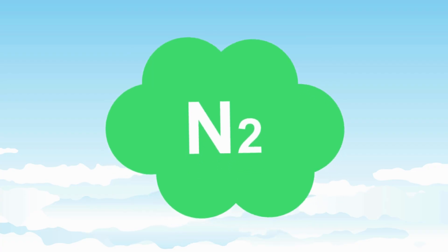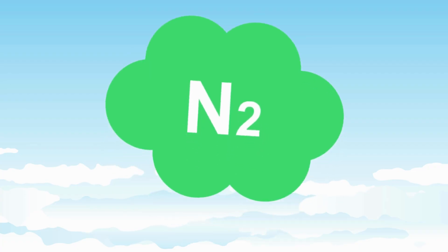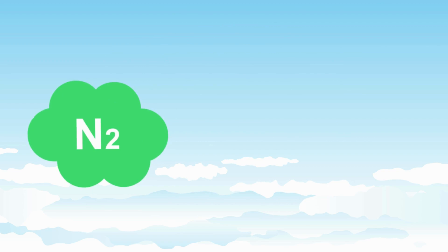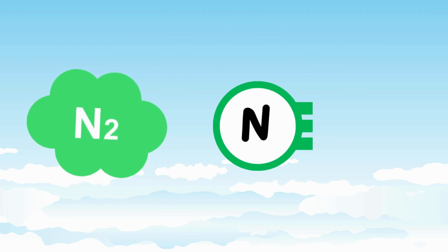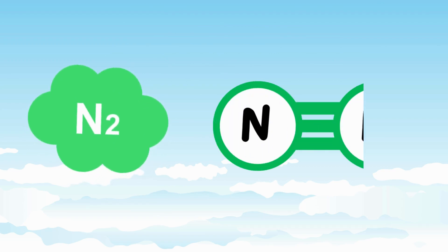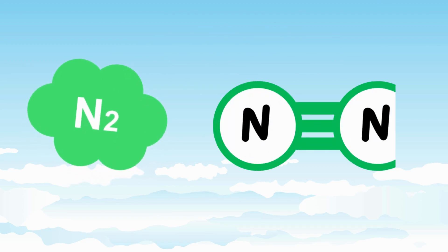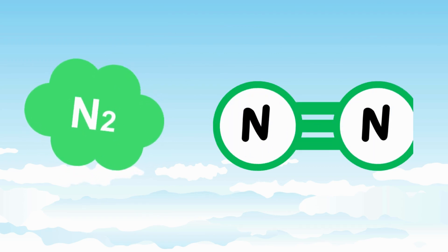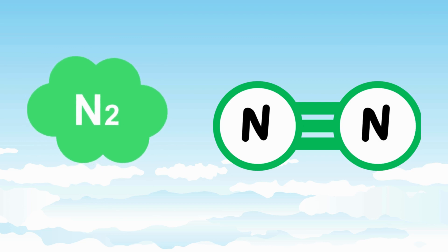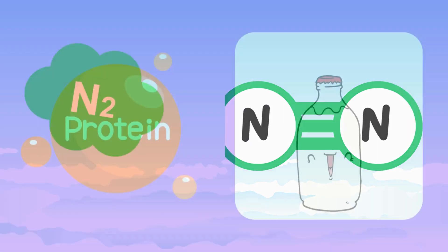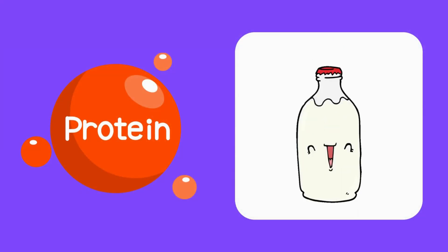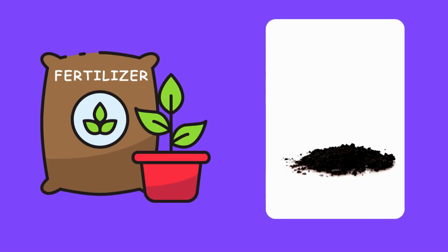Nitrogen gas is very stable. It doesn't react easily because the two nitrogen atoms hold onto each other really tightly. But in compounds, nitrogen can be super important, like in proteins, DNA, and even fertilizers that help plants grow.